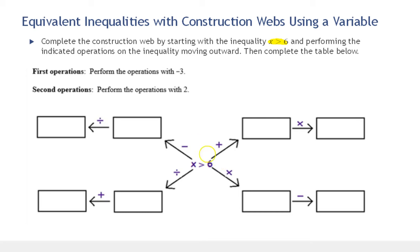Starting with x is greater than 6, our first operations are with negative 3. We're subtracting: left-hand side x minus negative 3, right-hand side 6 minus negative 3. We did not multiply or divide by a negative, so we don't have to reverse the direction. We have x plus 3 is greater than 6 plus 3, which is 9.